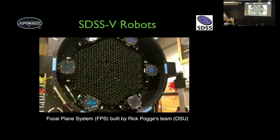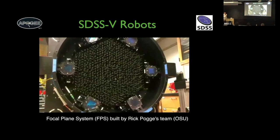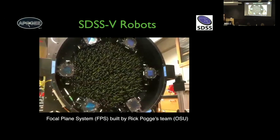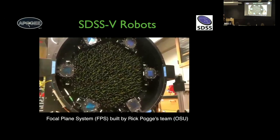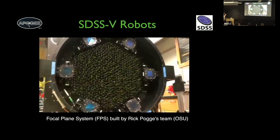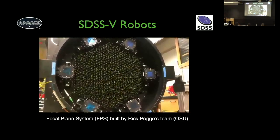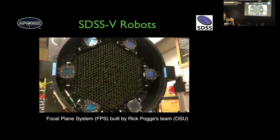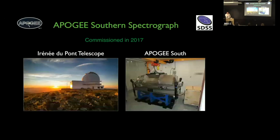Now in SDSS-5 we have robots — a focal plane system built by Rick Pogge's team at OSU — which can reconfigure in just a few minutes. We have this now in both the north and south, so we'll be mowing the sky and getting high-resolution infrared spectra of millions of stars.